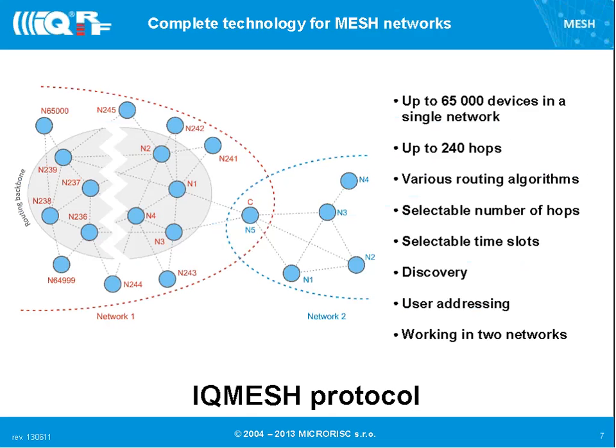Any module you buy from us can be the coordinator — it is based on the application. To create a network, first you upload the application into the modules, which can also be done wirelessly. The first step is bonding: connecting specific nodes to a specific coordinator, so the coordinator knows it has 5, 10, 200, or up to 65,000 nodes in the network.